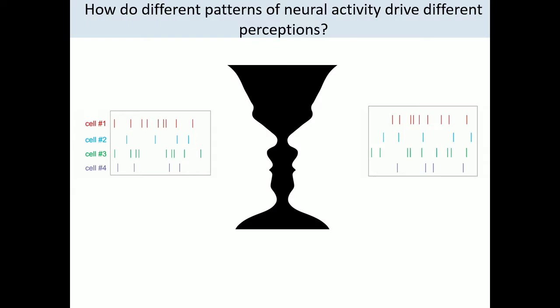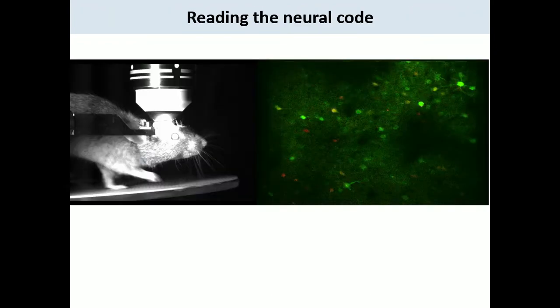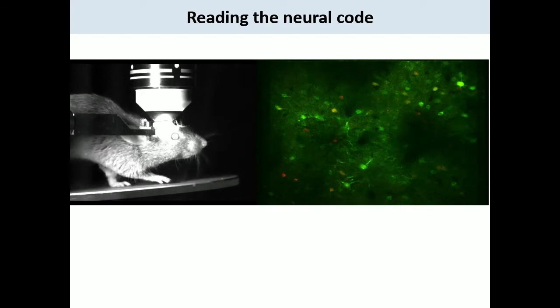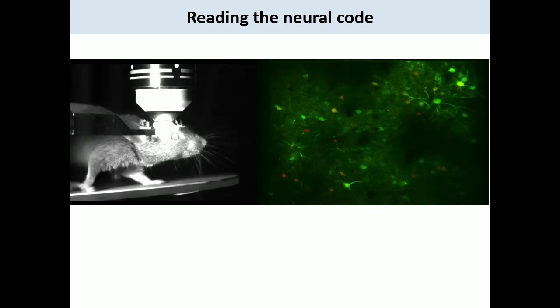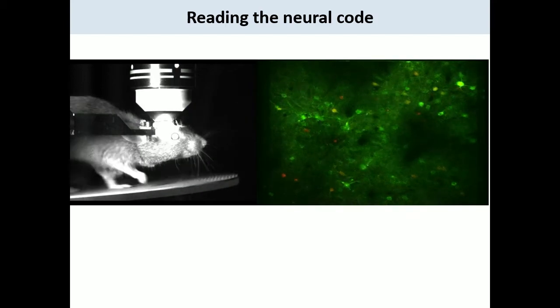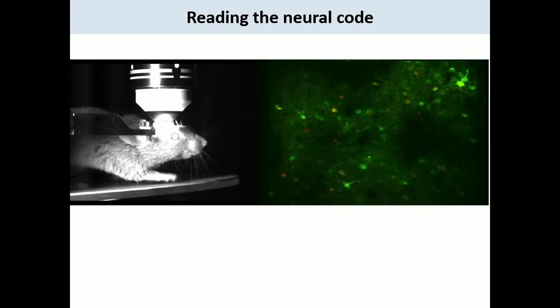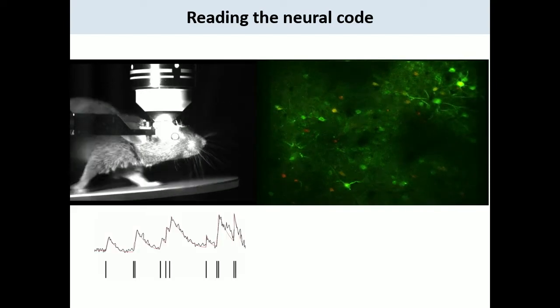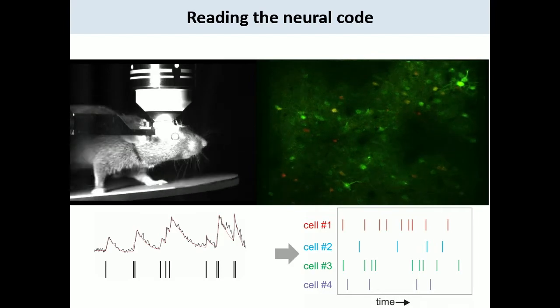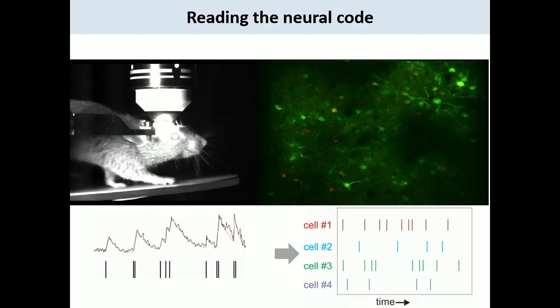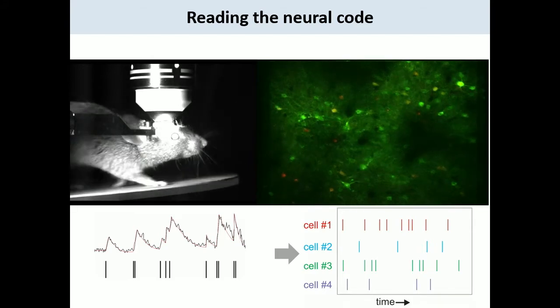My lab realized we had to develop a new technology, building on the work of many others, so we can write in extremely specific patterns of activity in the brain to see if we can drive specific percepts. To read the neural code, we use existing technology — two-photon functional calcium imaging. Neurons express a fluorescent dye whose fluorescence corresponds to neuronal activity. We do this in mice, placing the animal with a small window in its brain under a two-photon laser scanning microscope to image activity at reasonable speeds and extract patterns while the animal experiences real sensory percepts.